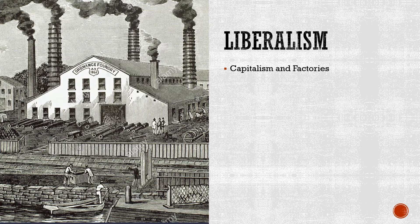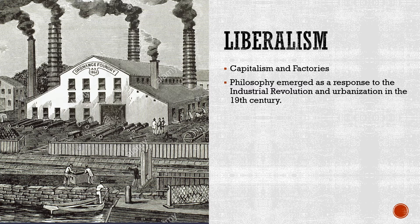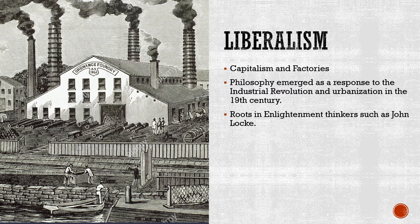Liberalism in the 19th century is associated with capitalism and the rise of factories coming out of the Industrial Revolution. The philosophy emerged as a response to the Industrial Revolution and the urbanization of the 19th century, but really its roots go further back — liberalism finds its roots in Enlightenment thinkers such as John Locke. To me, liberalism is directly associated with the rise of the middle class. We've been talking about the rise of the middle class in this course — going way back to the 12th century, the rebirth of cities and the rise of merchants, often called the bourgeoisie, who were the prototype for the middle class.